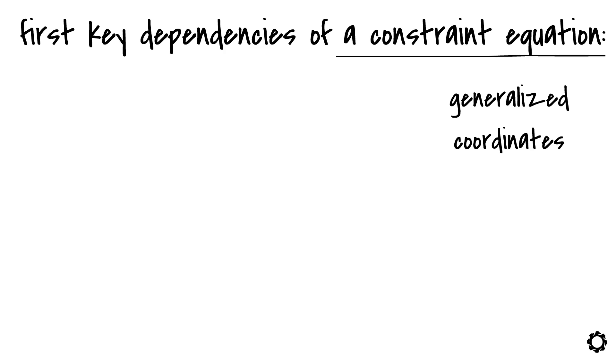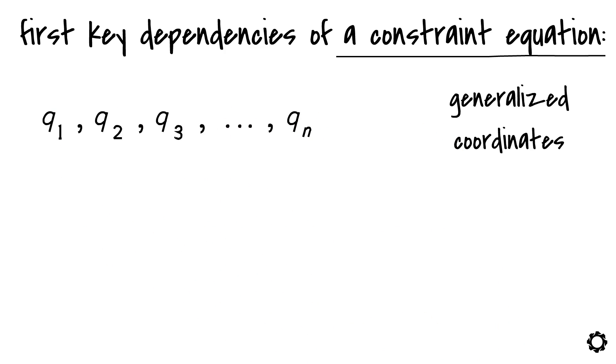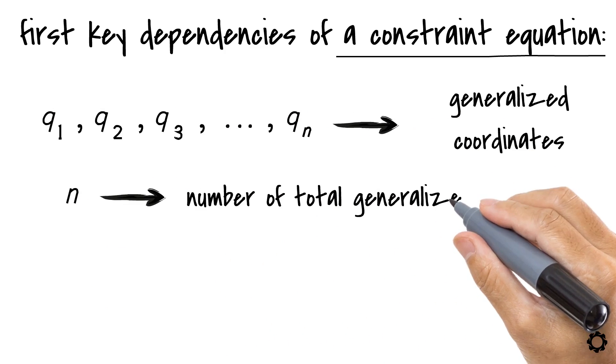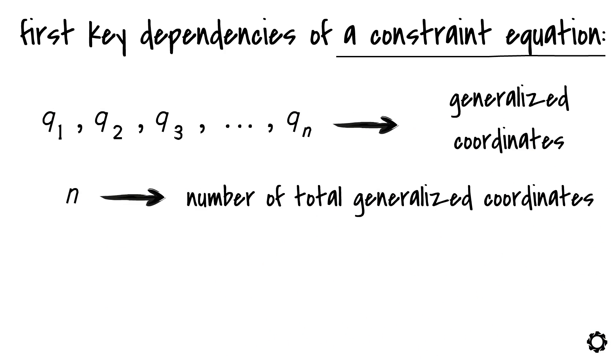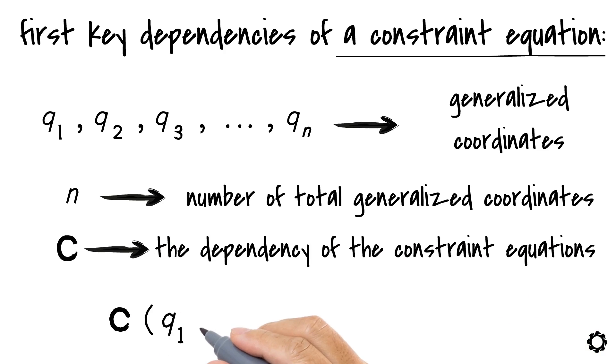Mathematicians would write something like, if q1, q2, q3, until qn are each one of our generalized coordinates, and n being the number of total generalized coordinates considered in the model, then the dependency of the constraint equations, that I will call from now on, C, can be written as C of q1, q2, q3, until qn equals zero.